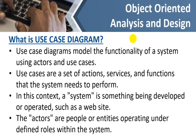So what is a use case diagram? A use case diagram models the functionality of a system using actors and use cases. With the help of a use case diagram we can define what a user can do with the system — it describes the functionality. Use cases are a set of actions, services, and functions that the system needs to perform. In this context, a system is something being developed or operated, such as a website.